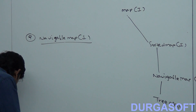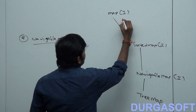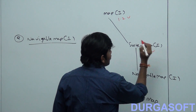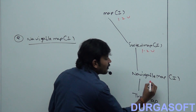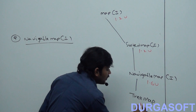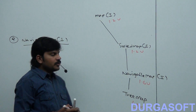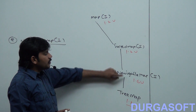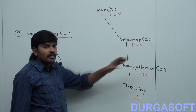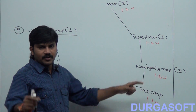Map concept came in the 1.2 version. Sorted Map concept came in the 1.2 version. Navigable Map concept came in the 1.6 version. Tree Map came in the 1.2 version. When we should go for Navigable Map — it defines several utility methods for navigation purposes.